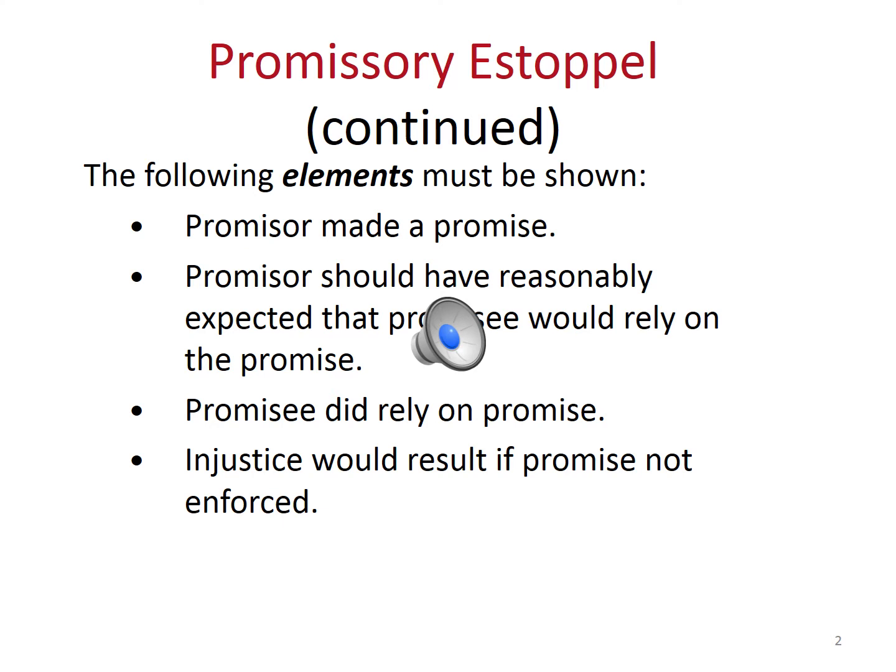The third element is that the promisee actually relies on the promise, and that reliance must also be reasonable. Reliance is a very important element. For example, if you go to a shop to buy a laptop, and on the back of the laptop there is a sign saying 'made in China,' but the vendor tells you that this laptop is made in Japan — and you understand English very well and can read it — but you decide to buy the laptop anyway.